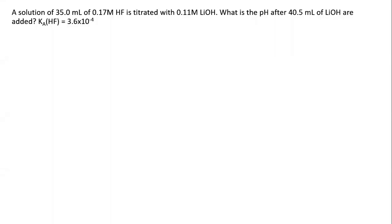Continuing with our calculations involving titrations. Here we have a solution comprised of 35 milliliters of 0.17 molar hydrofluoric acid solution, titrated with 0.11 molar lithium hydroxide. What's the pH after 40.5 milliliters of lithium hydroxide are added? The Ka of the weak acid is 3.6 × 10⁻⁴.